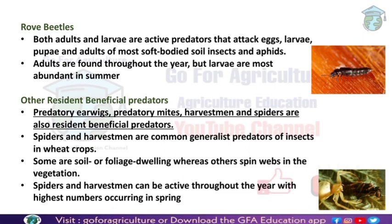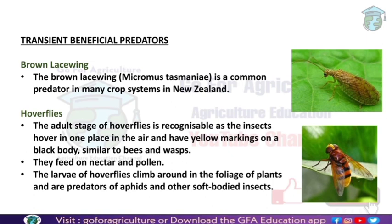Other resident beneficial predators include predatory earwigs, predatory mites, harvestmen, and spiders. Spiders and harvestmen are among the most common predators of wheat pests. Some are soil or surface dwellers while others spin webs in vegetation. Spiders and harvestmen can be active throughout the year, making them valuable resident predators alongside carabid beetles, rove beetles, and predatory earwigs.